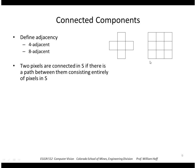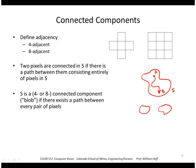So a region S, if I have a region of 1s, two points are connected if there is a path between them that is entirely within S. It travels along 1s the entire way. So these two regions would not be connected. So S is a connected component if there is a path between every pair of pixels in S.